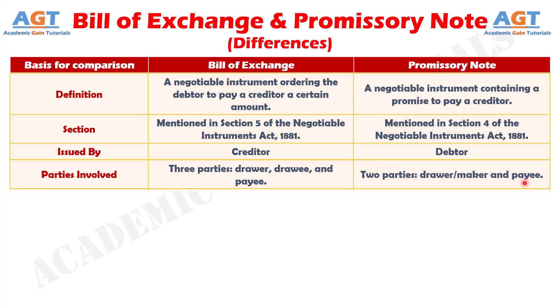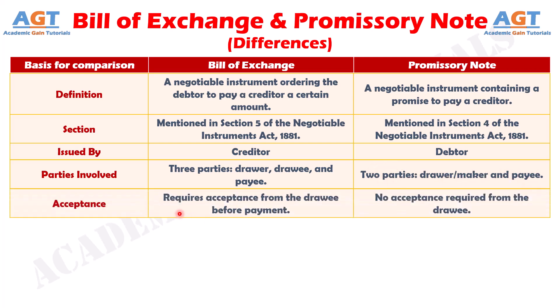Number five: A Bill of Exchange requires acceptance from the drawee before payment, whereas a Promissory Note requires no acceptance from the drawee.